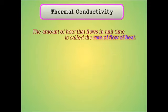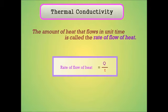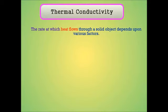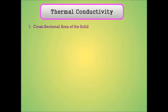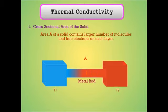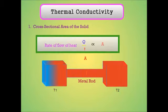Heat Q flows along its length L to opposite face at temperature T2 in t seconds. Rate of flow of heat is equal to Q/t. The rate at which heat flows through solid object various factors par depend karti hai. Cross-sectional area of the solid: larger cross-sectional area A means larger number of molecules or free electrons har layer mein. Rate of flow of heat is directly proportional to area A.